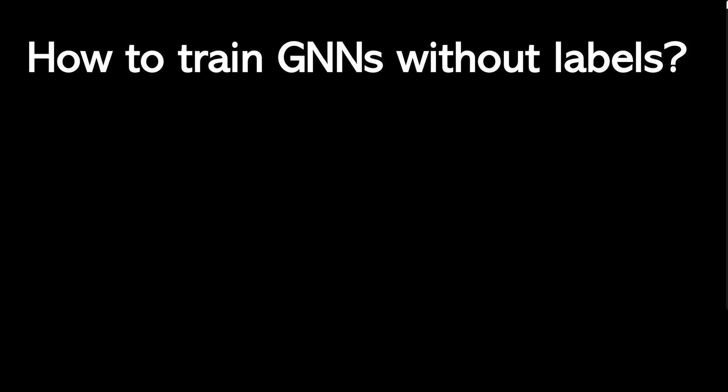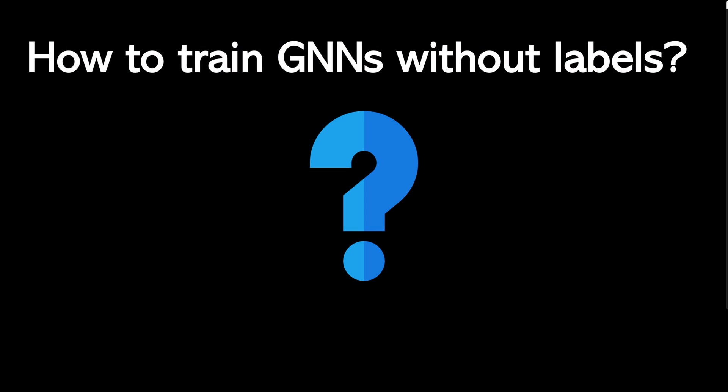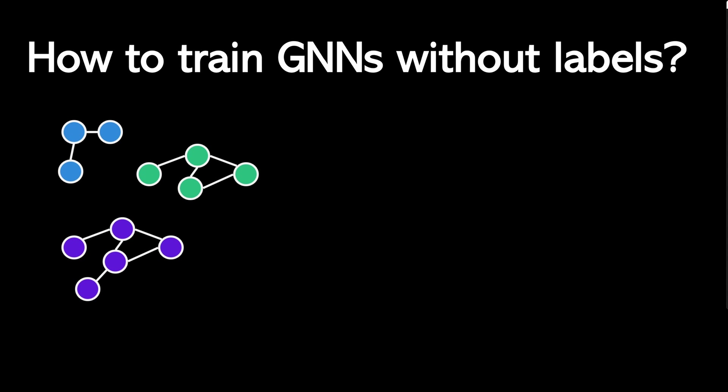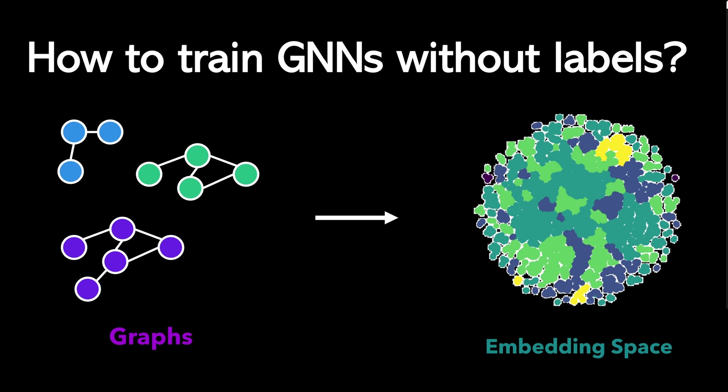Hello there! Recently I came across the question how to train graph neural networks in an unsupervised fashion. That means we have some unlabeled graphs and want to learn a representation of them independent of any task. There are different ways to do that and I will present a couple of approaches in this video. So I hope you enjoy it and let's get started!